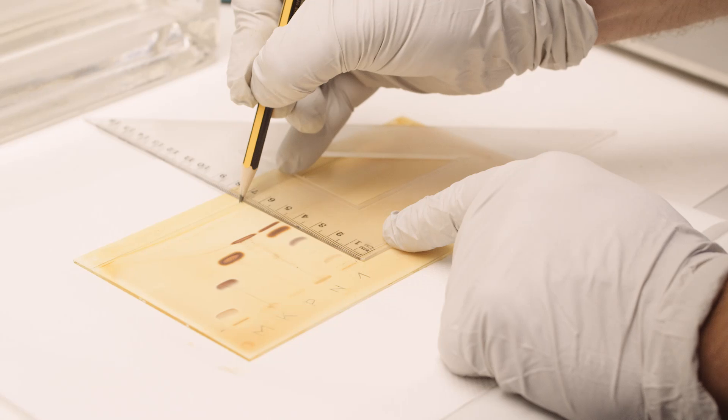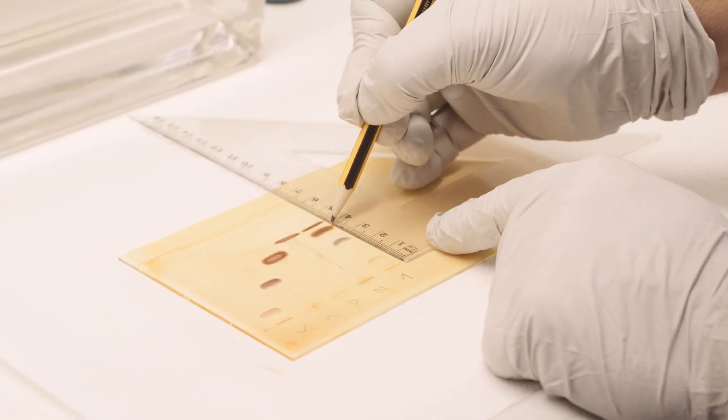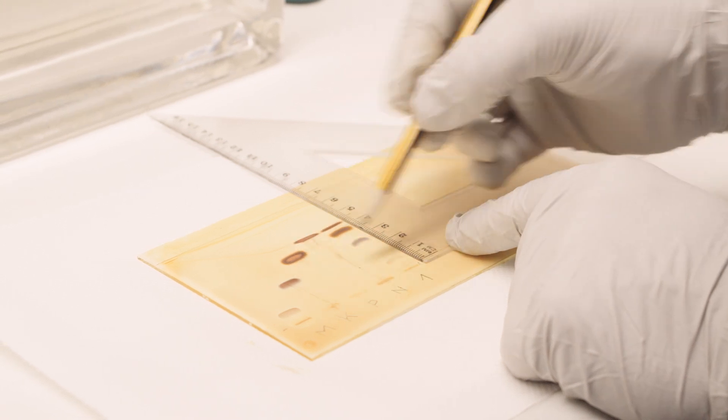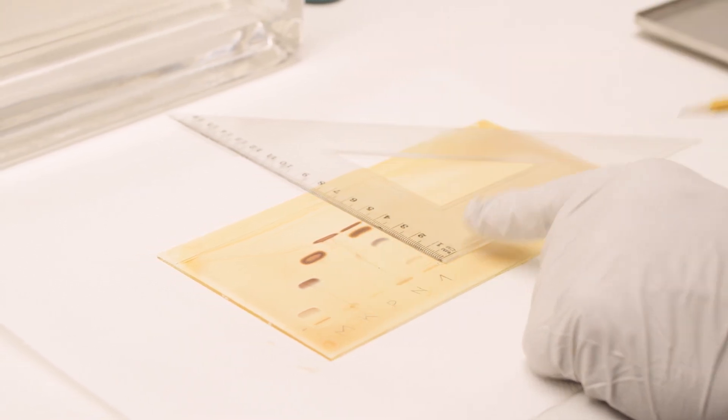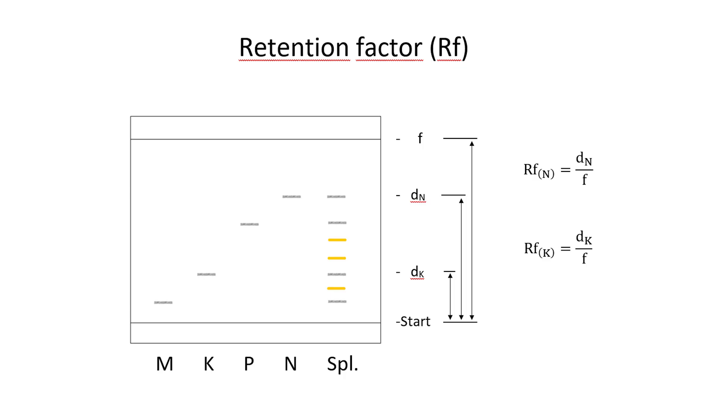The colored spots in the extract samples are expected to meet the spots of alkaloid standards. We can conclude from this that all four alkaloids are present in our sample. Some additional spots are observed in the sample and are the result of other alkaloids such as thebane.